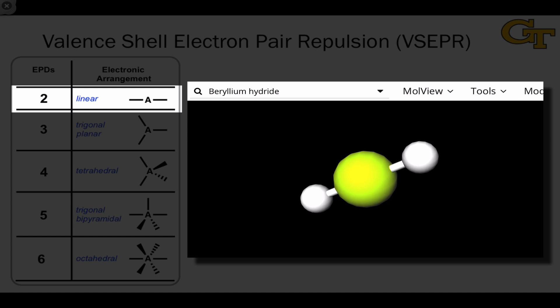We've got a central beryllium atom surrounded by two hydrogen atoms with no lone pairs on the beryllium atom. The geometry here is linear. There's a 180-degree bond angle between the two BeH bonds. The linear geometry places these bonds as far apart as they can possibly get.